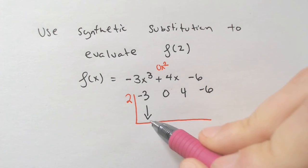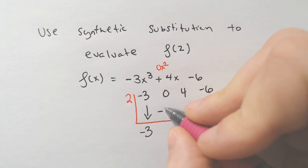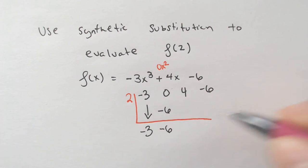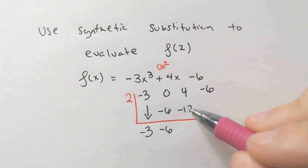You just do your synthetic division like normal. You bring your first number down, negative 3. Multiply by 2. 2 times negative 3 is negative 6. Add straight down, you get negative 6. Multiply 2 times negative 6, you get negative 12. Add straight down, you're going to get negative 8.